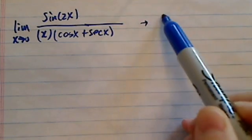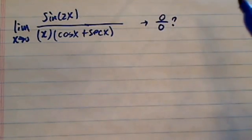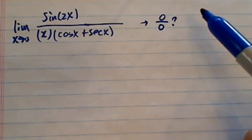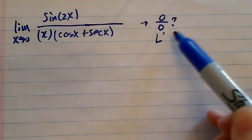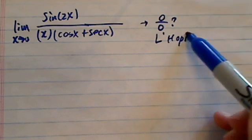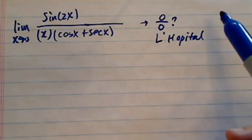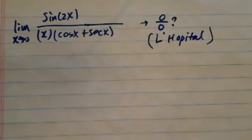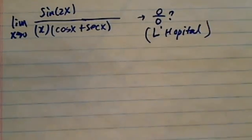The first thing you want to check is this is 0/0 form, because if it is a 0/0 form, you can use L'Hôpital's rule. There's a funny story about L'Hôpital in school. We always called it L'Hôpital until our calculus teacher got tired and said it's called L'Hôpital.